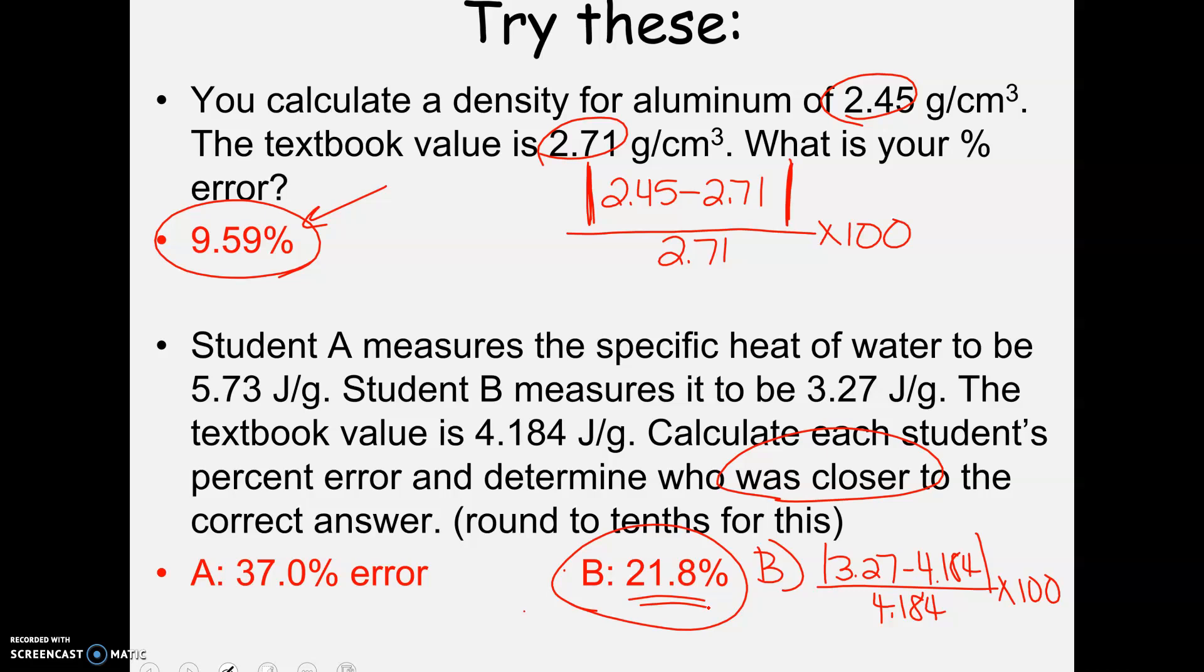And again, this doesn't mean if you get a high percent error in the lab that you did a bad job. Honestly, remember, you're limited by how good your equipment is. So it could be an equipment issue that your thermometers were faulty or your balances weren't measuring accurately. So keep that in mind, too.